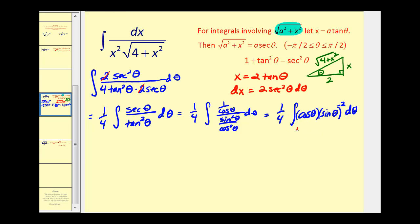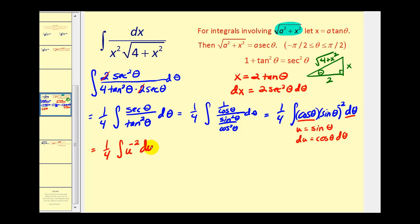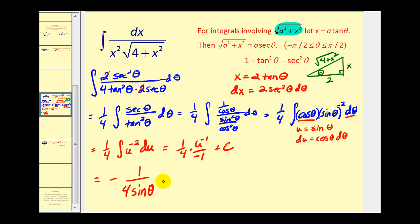Now things look a lot better. Let u = sin(θ), then du = cos(θ) dθ. So we have (1/4) times the integral of u^(-2) du. Integrating with respect to u gives (1/4)·u^(-1)/(-1) + C. Replacing u with sin(θ), we get -1/4, and moving sin(θ) to the denominator gives -1/(4·sin(θ)) + C.